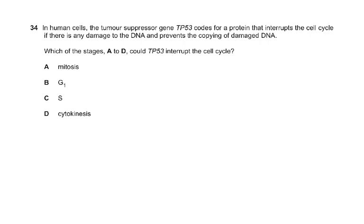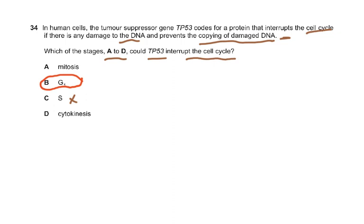Coming to question number 34: in human cells, the tumor suppressor gene TP53 codes for a protein that interrupts the cell cycle if there is any damage to the DNA, and prevents the copying of damaged DNA. The copying of DNA takes place in S phase — the synthesis phase — of interphase. The stage before S phase is G1. So TP53 interrupts the cell cycle at G1, preventing S phase from taking place. It's a little catchy question — the answer is G1.